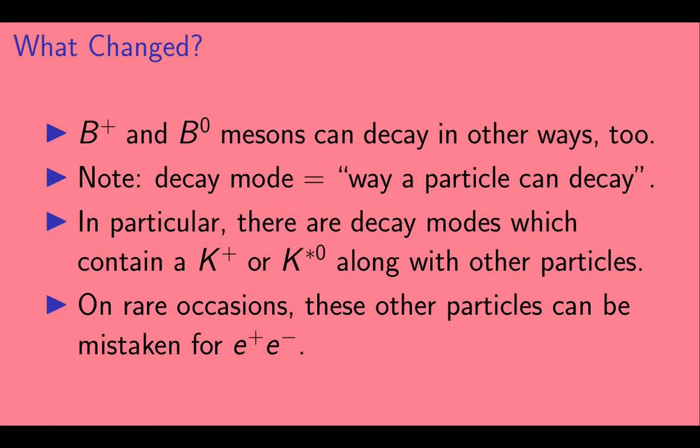OK. So the B plus and B naught mesons can decay in other ways than what we've been interested in here. I'm going to introduce a tiny bit of jargon. A decay mode is a way in which a particle can decay. So basically, a set of particles that it decays to. In the case of these B mesons, there are decay modes that include a K plus or K star, like what we're interested in, plus other particles. On rare occasions, these other particles can be mistaken for E plus E minus.